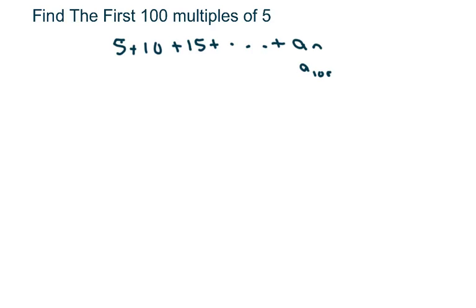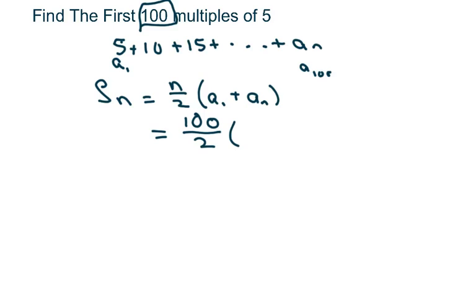And basically, the sum formula is n over 2 times your first term plus your last term. This is your first term. And if I fill this out, I know I have my total n is 100 over 2, and my first term is 5, but I don't know what my last term is.